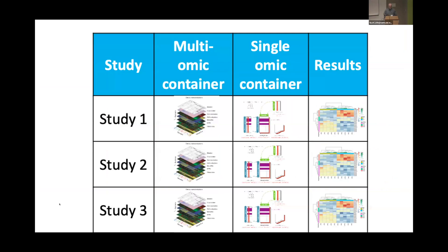In meta-analysis, the experimental unit is a whole study, meaning an object-oriented class that has a multi-omic container. From that we extract one layer — say microarray gene expression — and from that we extract just the results we want. The idea is that we put the experimental unit in the rows and then systematically do row-wise operations that do not violate the experimental unit.